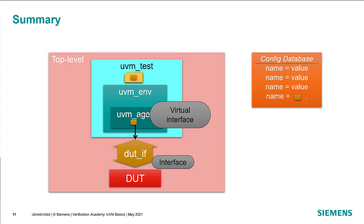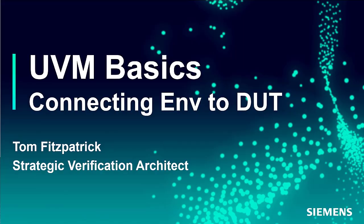To summarize: we have an interface that we use at the top-level module to connect to our DUT. We create a virtual interface that is a pointer to that interface object and pass it into the configuration database from the top-level module. The test gets that virtual interface object from the config database, passes it down to the environment, the environment passes it to the agent, and the agent uses that pointer to the DUT interface to communicate at the signal level to the DUT. That's it for this session of UVM Basics — please join me for session four.